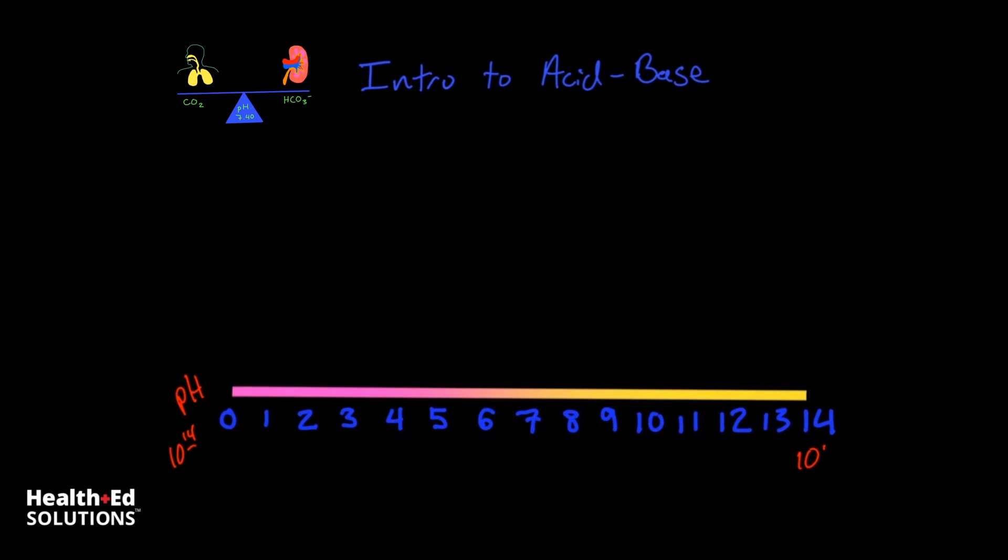You don't need to necessarily know that, but you do need to know that the lower the pH, the more hydrogen ions there are, and the more acidic the solution will be. And the higher the pH, the more basic a solution is, and the lower the hydrogen ion level will be.